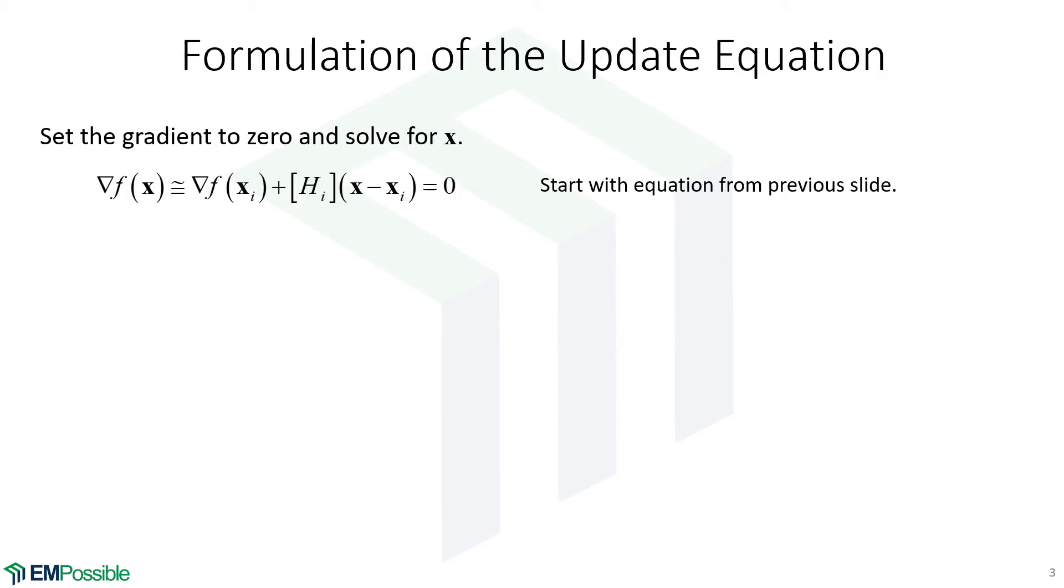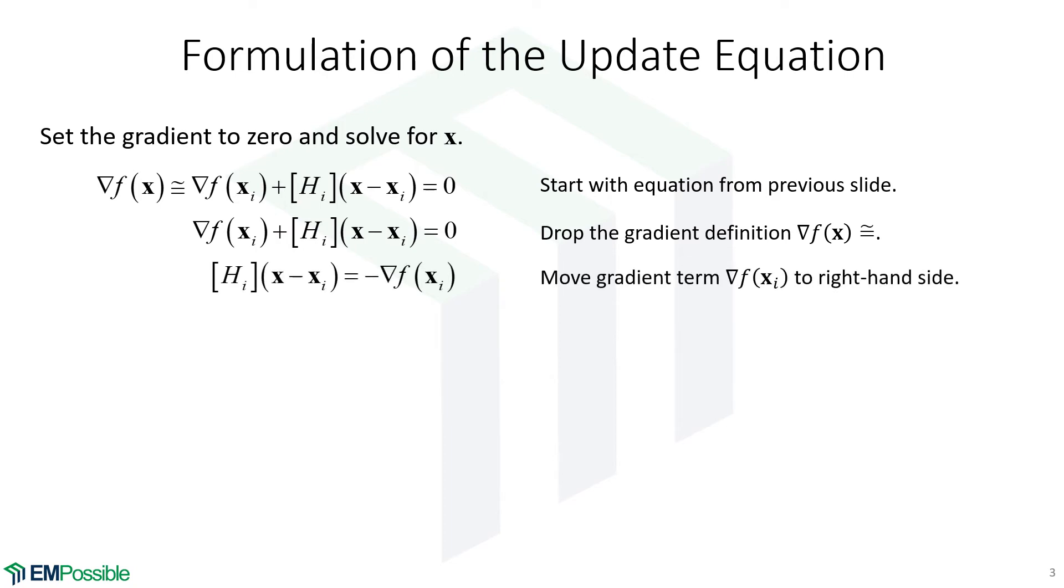We start with the equation from the previous slide. This is the gradient set equal to zero. We'll just drop the gradient definition on the left and proceed with this equation. First thing we'll do is move the gradient term to the right-hand side of the equation.